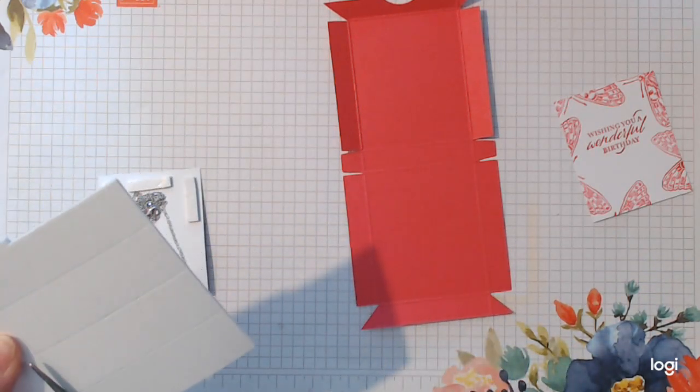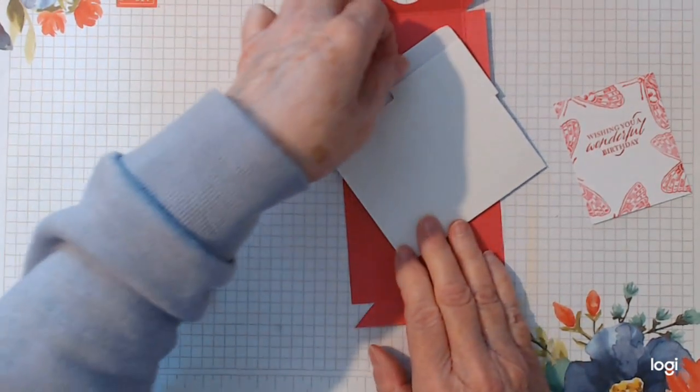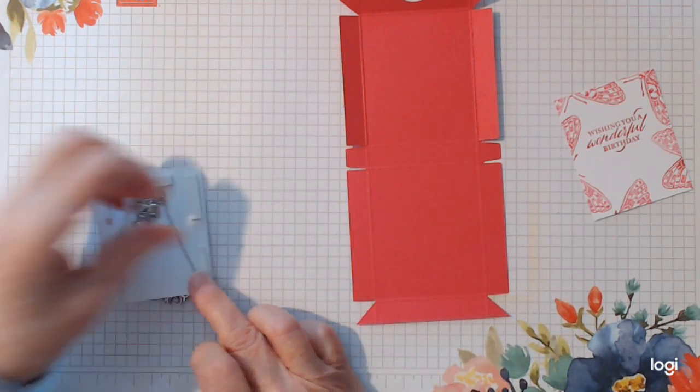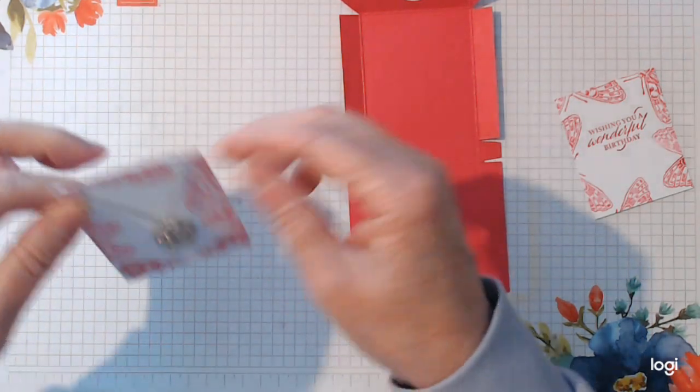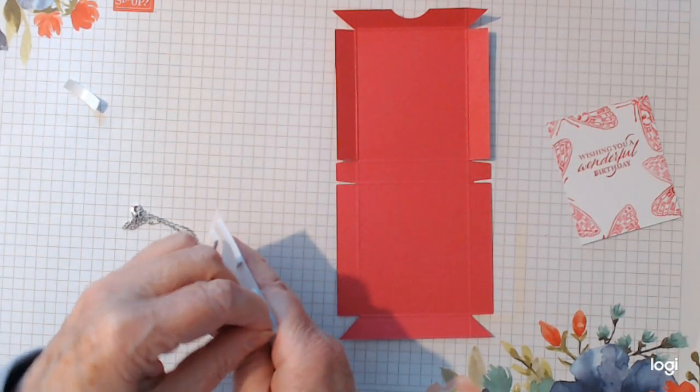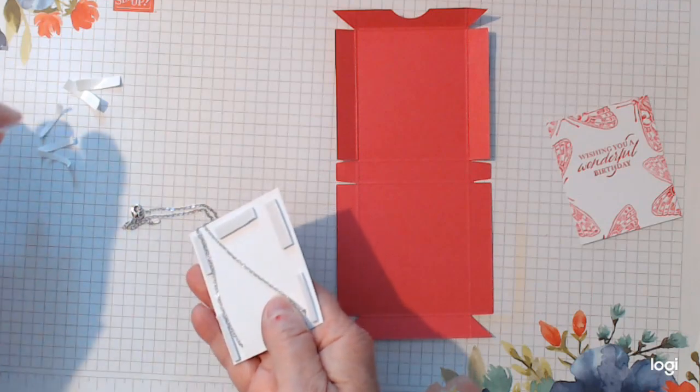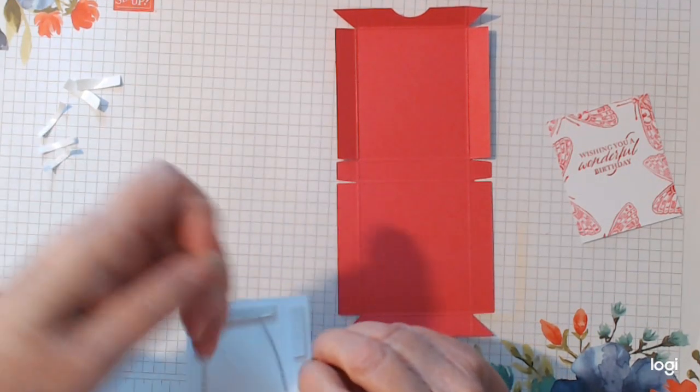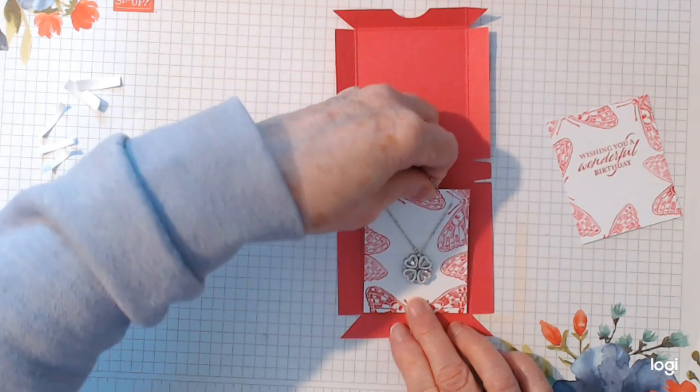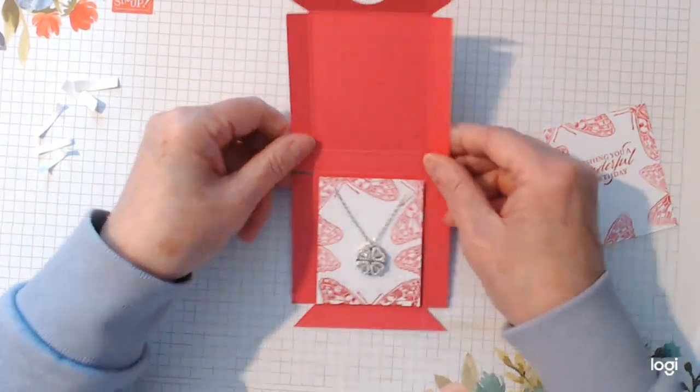Just sort of make it a wee holder that that can slide down there. And I'm just going to put another two pieces on the top. So that will hold that. And then slide that inside. And that should hold that nice for you.